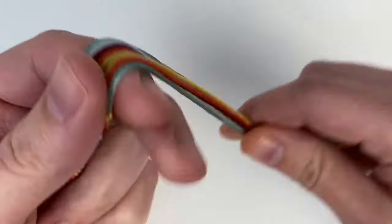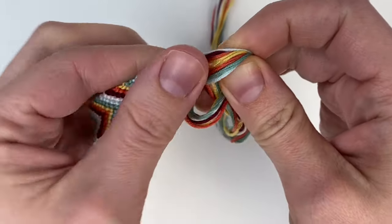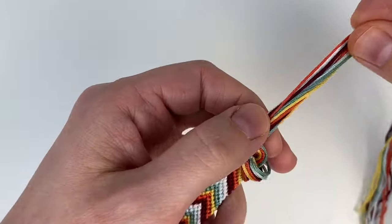Then just tie one more overhand knot at the bottom of your bracelet and trim the excess cord off and you're done.